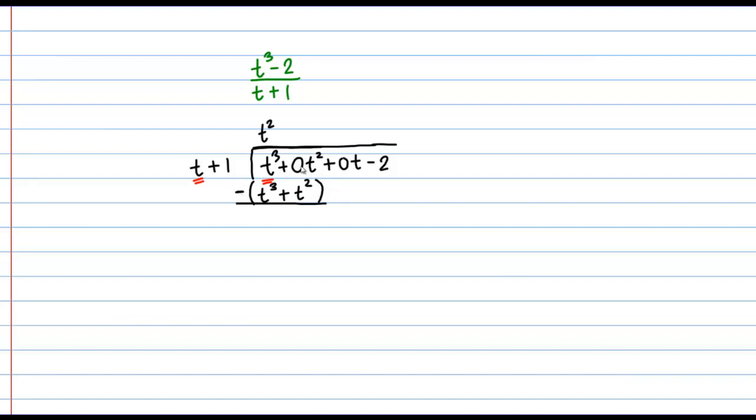This is why I put these extra terms in here so that I could space this nicely, line this up nicely. Now what I have is t cubed minus t cubed. If you did this correctly, those first terms should always cancel to 0. Then I have 0 minus t squared. That gives me minus t squared overall. Then I can actually go ahead and bring down my other terms. From here I'm going to keep repeating the same process.